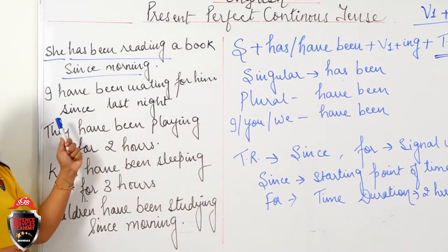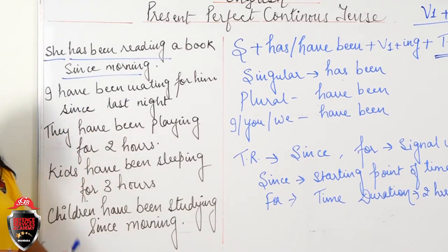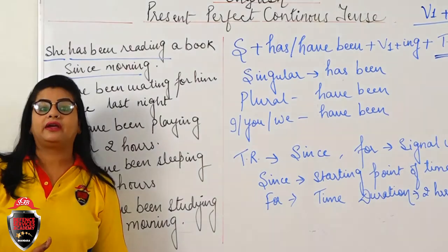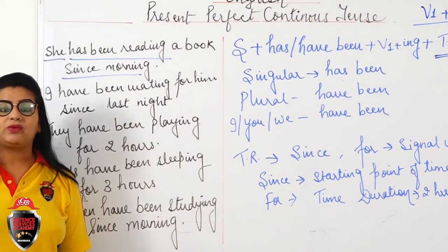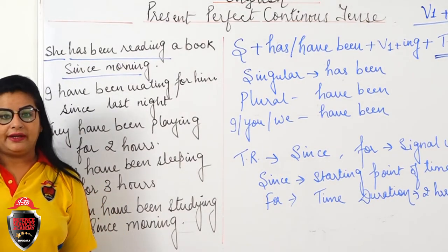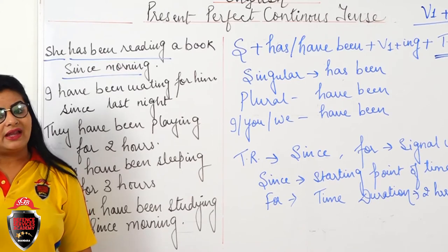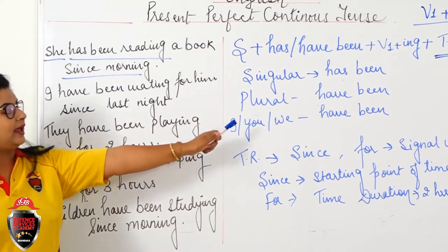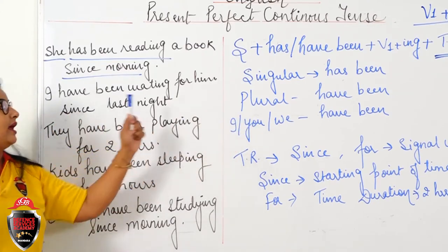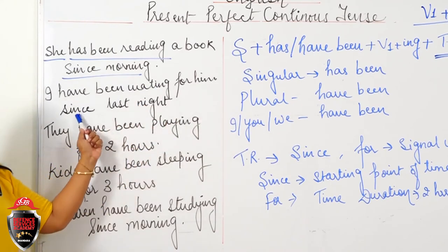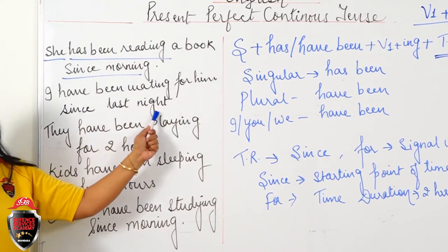Next: 'I have been waiting for him since last night.' Main pichli raat se uska intazaar kar rahi hoon. That means it is still continuing — the wait is still going on. I is used, so 'have been' is used. I have been waiting for him since last night.